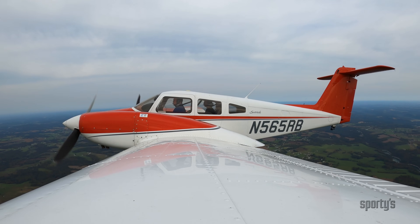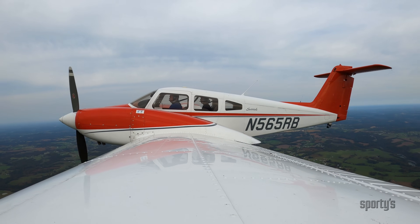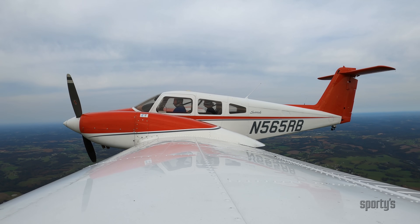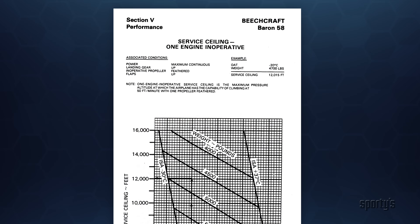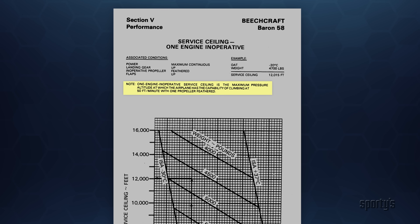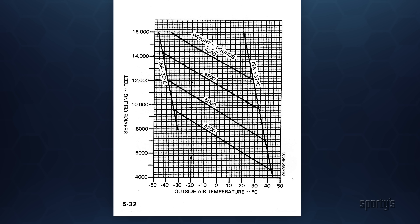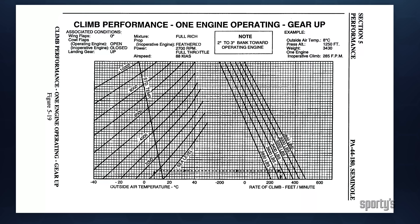Even with the gear and flaps up and the inoperative engine's propeller feathered, your calculation may show a descent. Your single engine service ceiling is the altitude where the airplane's rate of climb will slow to 50 feet per minute. Some manufacturers include a chart for this ceiling. If one is not included, you can work backward using the single engine rate of climb chart.